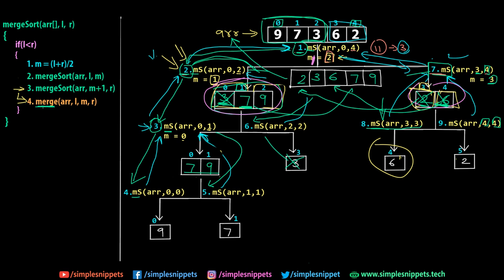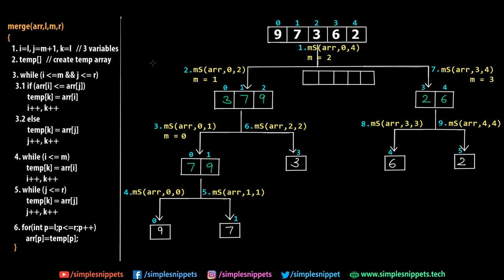Now let's explain exactly how the merge function works. On the left side of the screen is the complete merge function, and on the right side is the full Merge Sort diagram. We assume merging has already happened at lower levels and we're performing the final top-level merge of [3,7,9] and [2,6] to get [2,3,6,7,9]. If you understand this one merge function, the same logic applies at every smaller level.